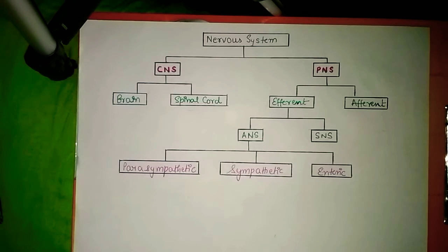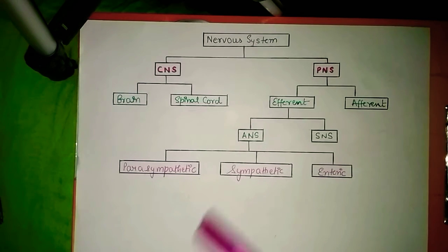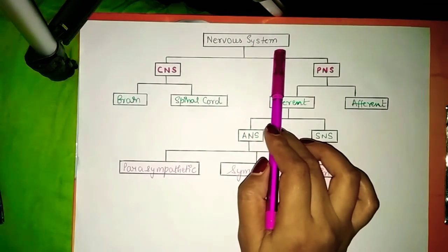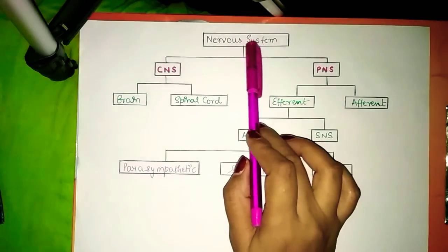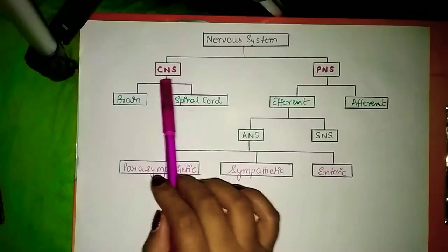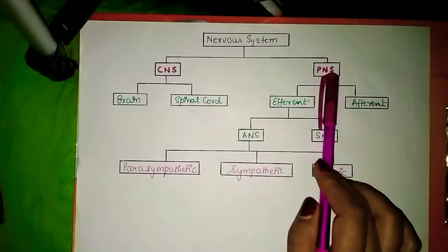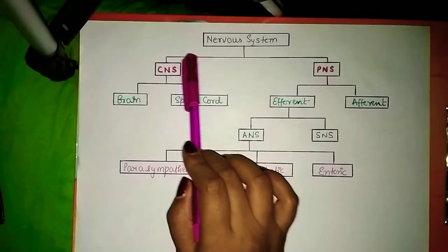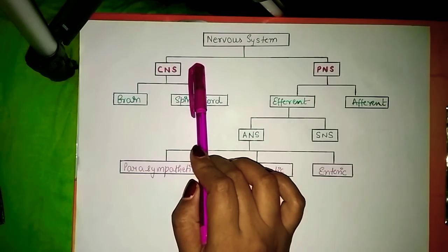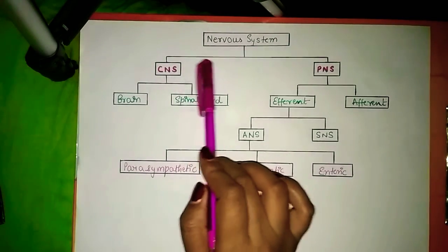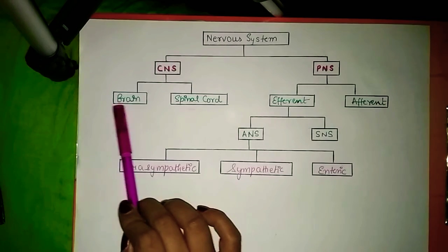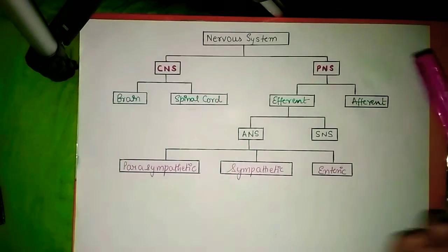In this video we will be discussing nervous system classification. The nervous system is the control center of our body and it is divided into two major systems: central nervous system and peripheral nervous system. The central nervous system is the site of information processing and control, and it is divided into two major parts: brain and spinal cord.